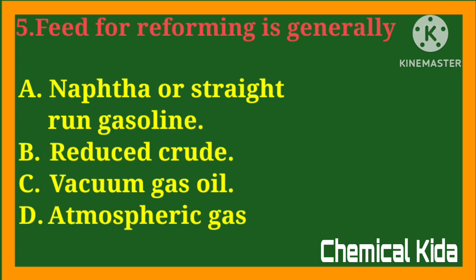Feed for reforming is generally: a) naphtha or straight run gasoline, b) reduced crude, c) vacuum gas oil, d) atmospheric gas. Answer: a) naphtha or straight run gasoline.